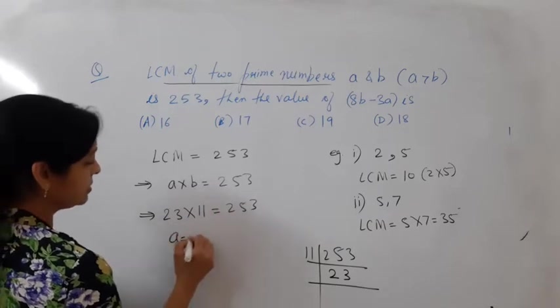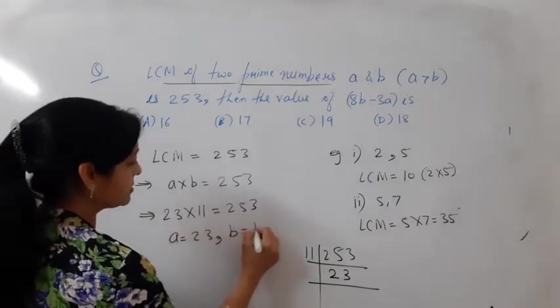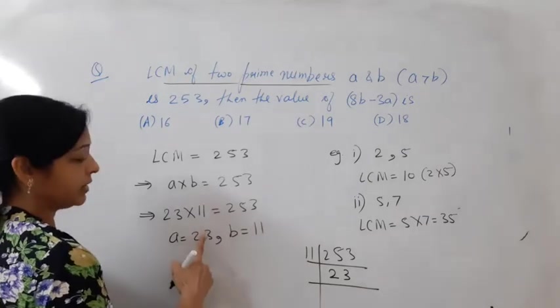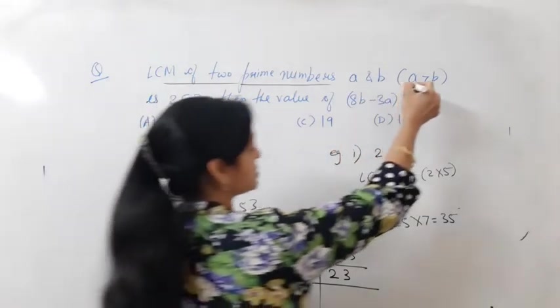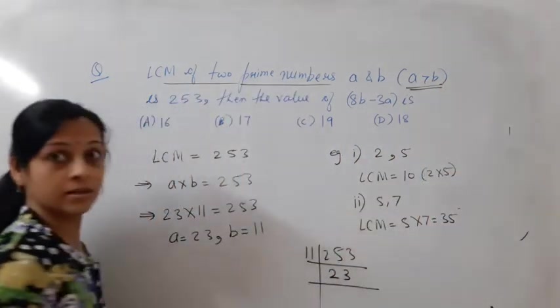That means A is 23 and B is 11. Here we have taken A greater than B because it is given in the question that A is greater than B.